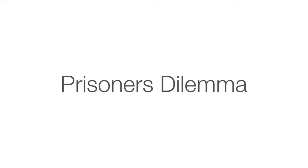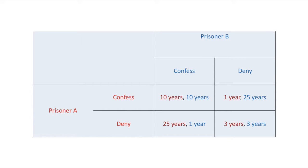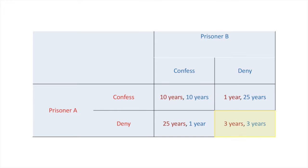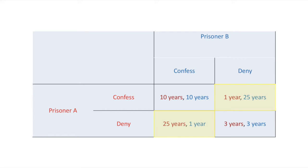There is a wide range of disciplines that Nash Equilibrium can be used for, from mathematics and economics to the social sciences. A classic example is the Prisoner's Dilemma, a simultaneous game played by two players. Two criminals suspected of a crime are arrested and put into separate interrogation rooms. If both confess, they both get ten years. If neither confesses, they both get three years. If one confesses and the other does not, the one who confesses gets one year and the other gets 25 years in prison.